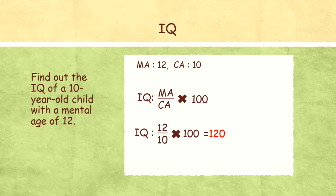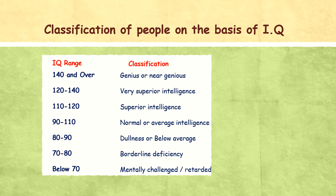Now we see what an IQ of 120 reflects by looking at the classification chart. IQ range 140 and over: genius or near genius. IQ 120 to 140: very superior intelligence. IQ 110 to 120: superior intelligence. IQ 90 to 110: normal or average intelligence. IQ 80 to 90: dull or below average. IQ 70 to 80: borderline deficiency. Below 70: mentally challenged.